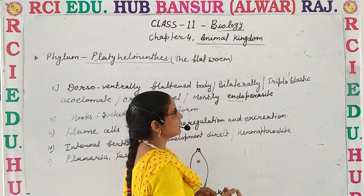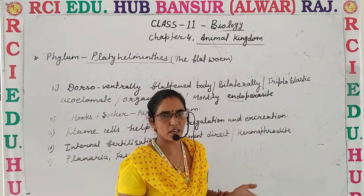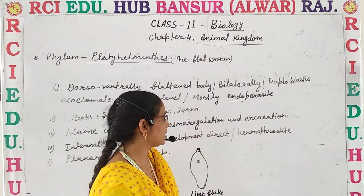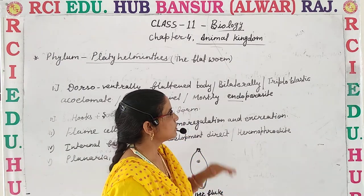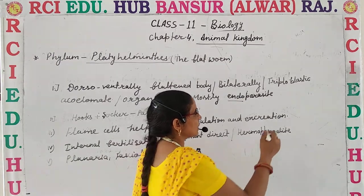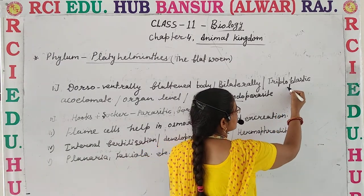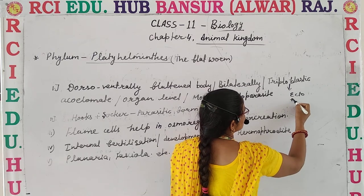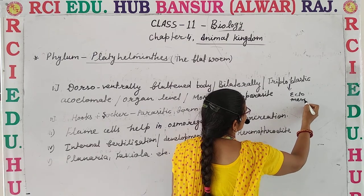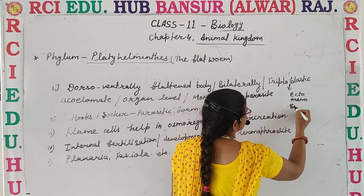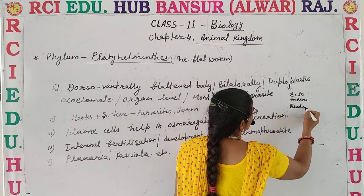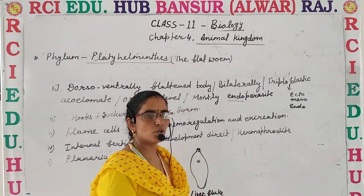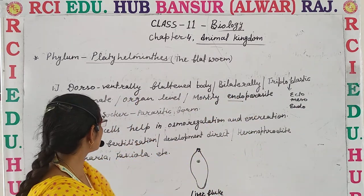Their body is bilaterally symmetrical, meaning the body can be divided into two equal halves through a single plane. They are also triploblastic, meaning three germ layers are present: ectoderm, mesoderm, and endoderm.